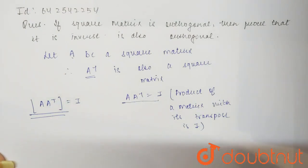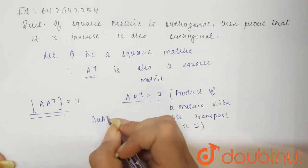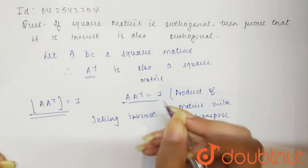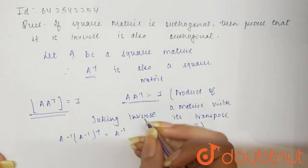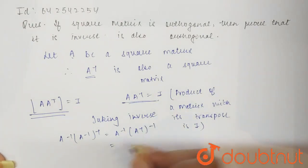Now let us do one thing, let us take the inverse of it. So taking inverse on this equation, this will become A inverse and A inverse transpose. Now, if you solve this, then this will be A inverse and this will become A T whole inverse. Now on right side, this will be I inverse.